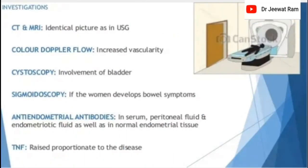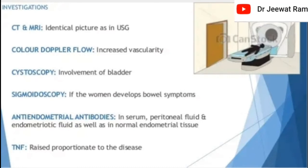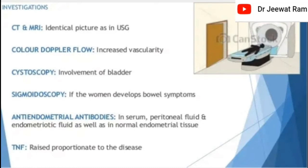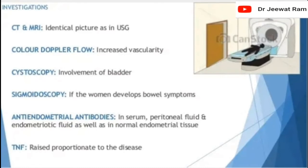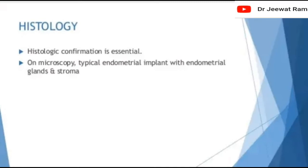Additional investigations: CT scan and MRI give an identical picture to ultrasonography. Colour Doppler flow shows increased vascularity. Cystoscopy for bladder involvement. Sigmoidoscopy if the patient develops bowel symptoms. Anti-endometrial antibodies may be found in serum, peritoneal fluid, endometriotic fluid, and normal endometrial tissue. Tissue necrosis factor is proportionate to the disease. Histological confirmation is essential; on microscopy, a typical endometrial implant shows endometrial glands and stroma.